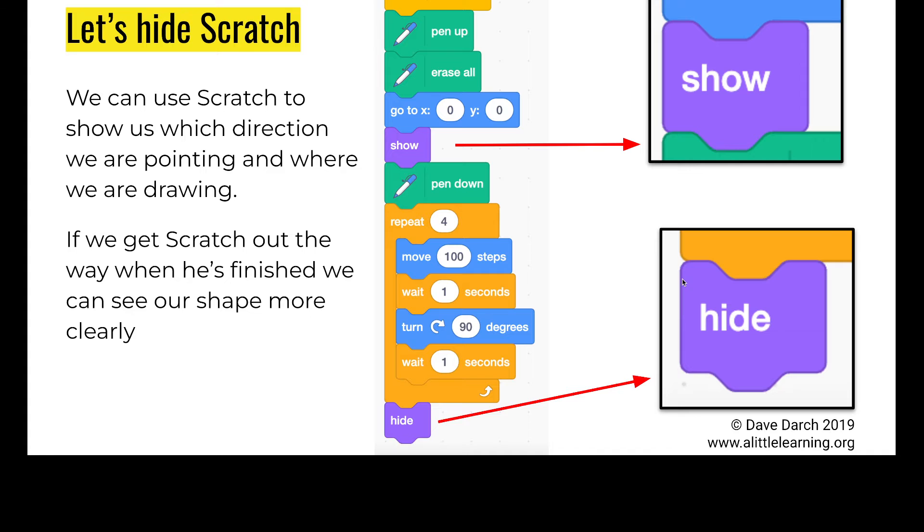Now you'll notice when Scratch has finished drawing, Scratch is still on the screen. In a minute I'm going to challenge you to draw a triangle with the same blocks we've used but by changing the numbers in our main loop, and you're not going to know if you've made the perfect triangle if Scratch is still in the way. We can click Scratch and move Scratch out of the way, but let's program Scratch to appear.